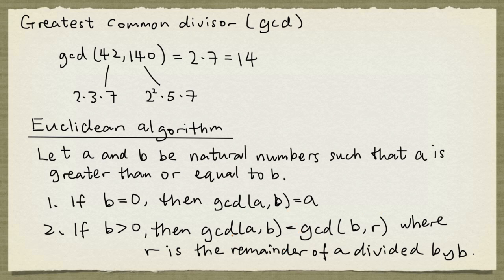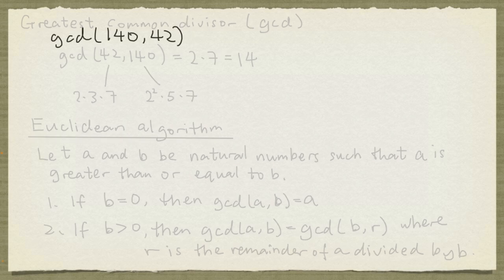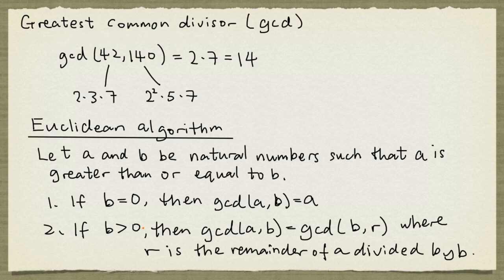So let's look at an example and see how this is going to work. Now let's compute the GCD of 42 and 140. And I'm going to turn things around and say GCD of 140 and 42 to match what we have here.